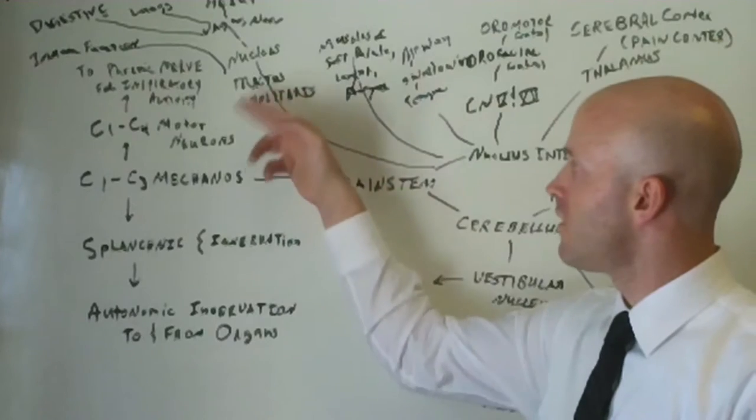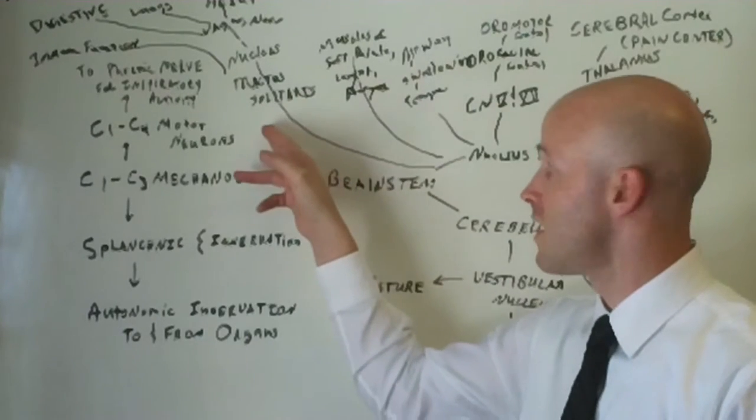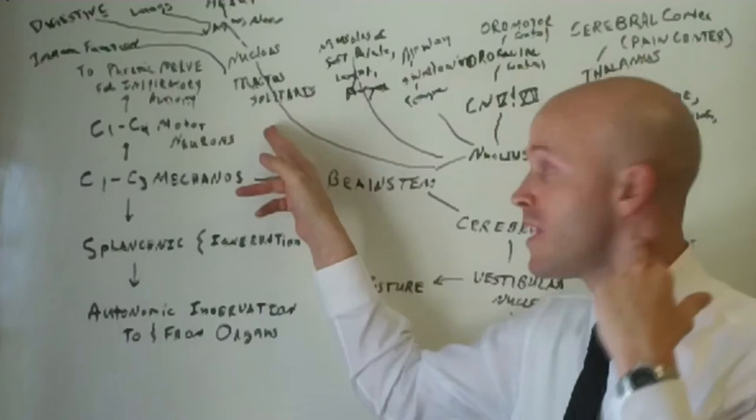Right over here, another long Latin word, nucleus tractus solitaris. That's another relay station in the brainstem. And look at that.